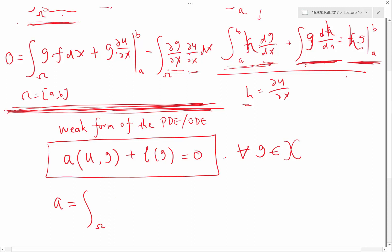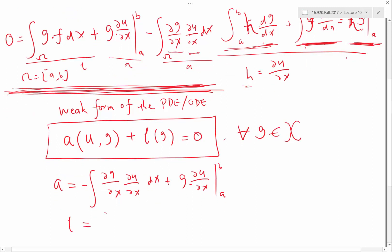so any term that includes both u and g belongs to A, so this actually belongs to L because the first term doesn't involve u, it only involves g. And this term belongs to A. So my function A is equal to minus integral dg dx du dx plus g times du dx at A and B. And my L, which is any term that does not involve the unknown solution u, is equal to this.